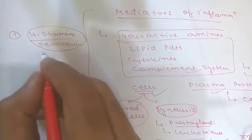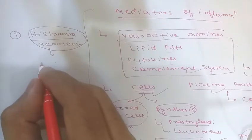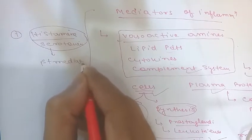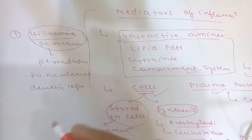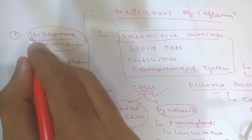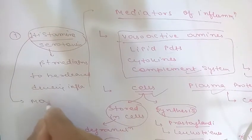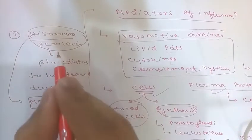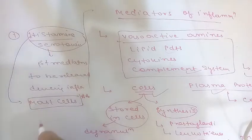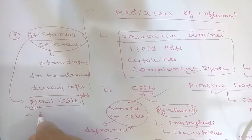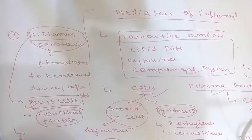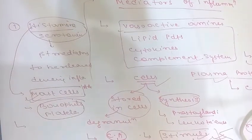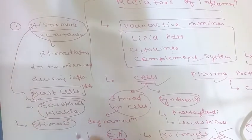Vasoactive amines are amines with important actions on blood vessels. They are stored as preformed molecules and are therefore among the first mediators to be released during inflammation. The source of histamine — the richest source — is the mast cell. Histamine can also be found in basophils and platelets. Histamine is stored in mast cell granules and is released by mast cell degranulation in response to a variety of stimuli.